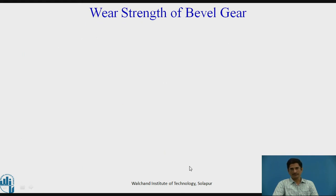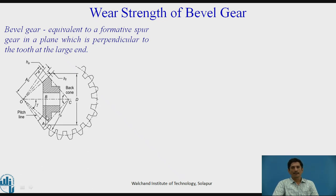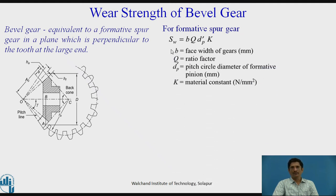Taking all this methodology further, let us derive the wear strength equation of a bevel gear. The bevel gear, we need to consider it as equivalent formative spur gear in the plane which is perpendicular to the tooth at the large end. This is the assumption that we did. For a formative spur gear, SW equals BQ DP dash K. All the terms have usual meaning. B is the face width of the gear in millimeter. Q is the ratio factor. DP dash is the pitch circle diameter of the formative pinion in millimeter. And K is the material constant in Newton per mm square.